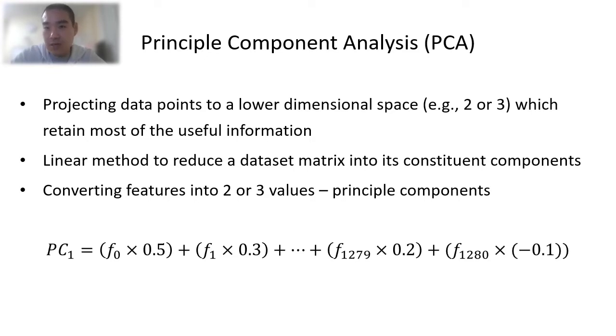Again, let's use the images that we mentioned earlier as an example. For each image, we have 1,280 features, which means 1,280 values. We want to use 2 or 3 values to represent this image. The 2 or 3 values are called the Principal Component. And by linear, we mean something similar to this.